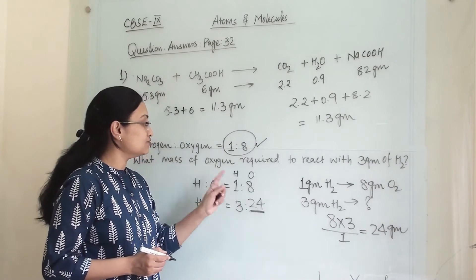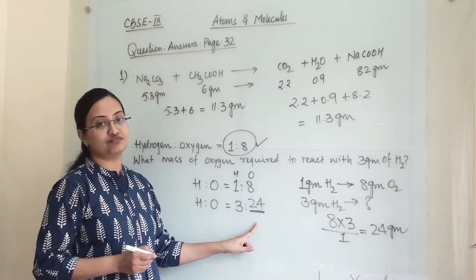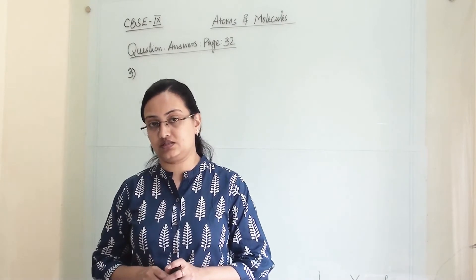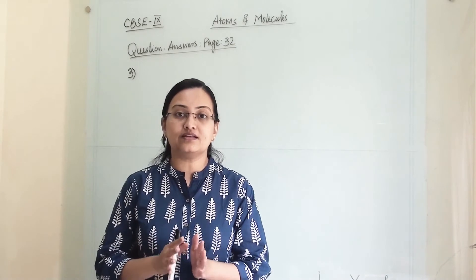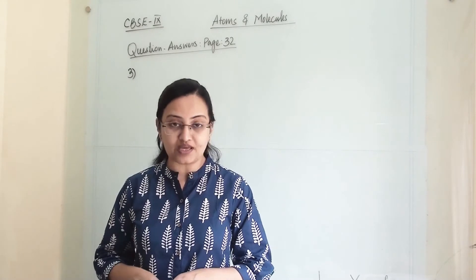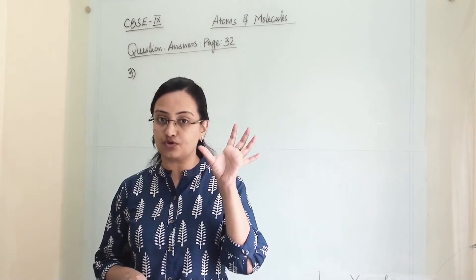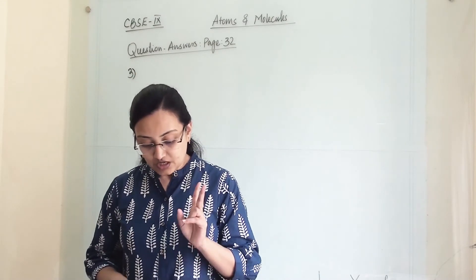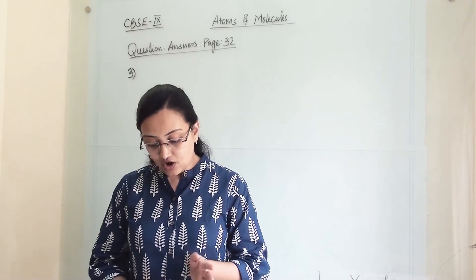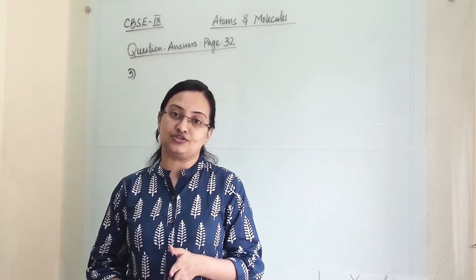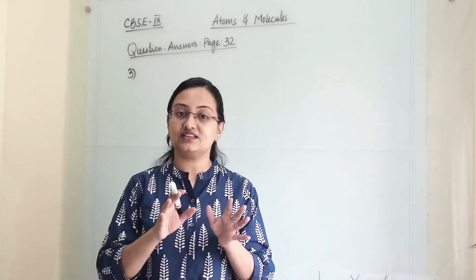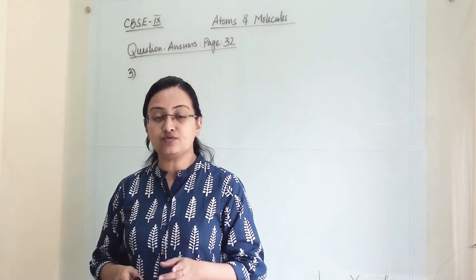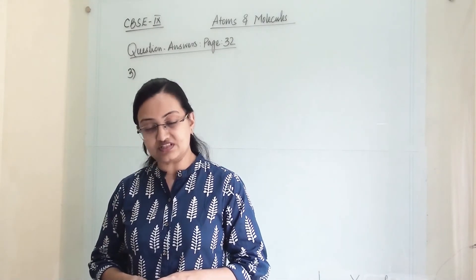So 24 gram of oxygen is required to react with 3 gram of hydrogen. The third question asks which postulate of Dalton's atomic theory is a result of the law of conservation of mass. The law states matter cannot be created and matter cannot be destroyed. The second postulate of Dalton's theory states that atoms are indivisible particles which cannot be created or destroyed in a chemical reaction. So whatever amount you add on the reactant side, that same amount you get on the product side. Therefore, the second postulate is the result of the law of conservation of mass.